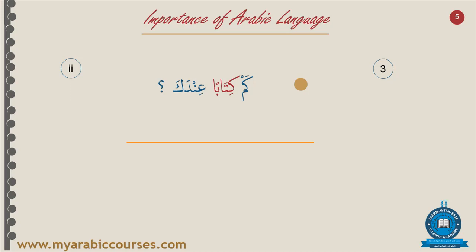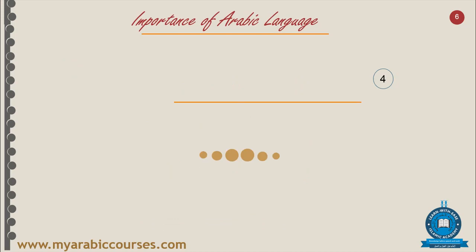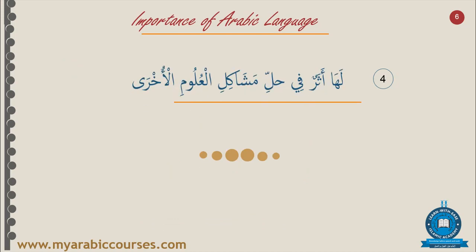For example, if you say كم كتاباً عندك, you are asking how many books someone has. But كم كتاباً عندك said with استعجاب — amazement — means 'You have so many books with you!' This shows how Arabic grammar conveys different meanings through context and delivery.